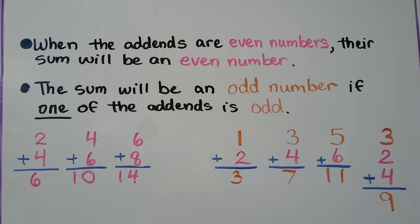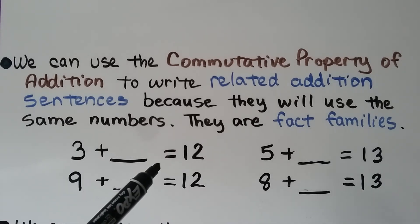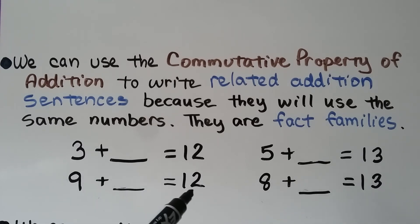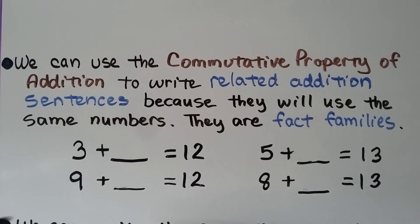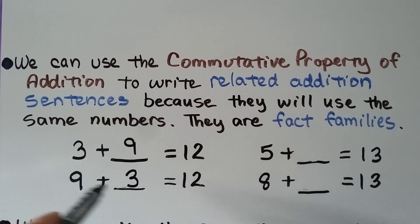We can use the commutative property of addition to write related addition sentences because they use the same numbers — they are fact families. 3 plus something equals 12, and 9 plus something equals 12. We have a 3, a 9, and a 12. So we can write 3 plus 9 is 12, and 9 plus 3 is 12. It doesn't matter which order we add them because the commutative property says it can be any order — they both equal 12.